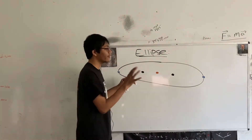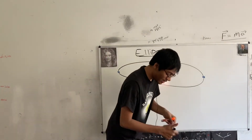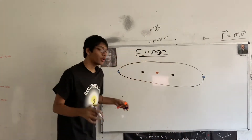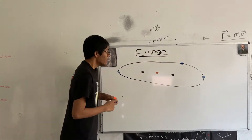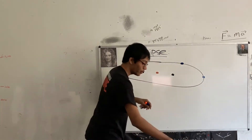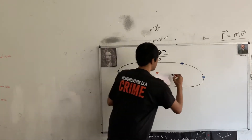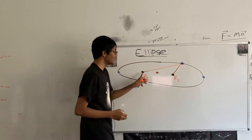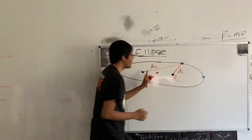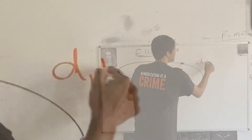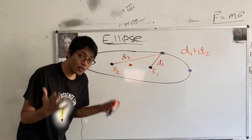Is there a defining property for the ellipse? As a matter of fact, there is. If you take any point on the ellipse — let's take this blue point over here — the distance from that point to either one of my foci, let's say the distance from this point to foci 2 is d2, and the distance from the point to foci 1 is d1. If I add these distances up, d1 plus d2, it's always going to be constant.